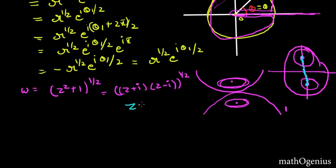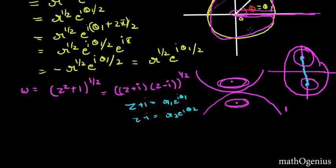Here is a hint for the exercise: put z + i = R₁·e^(iθ₁) and z − i = R₂·e^(iθ₂). If there were no i, the branch point would be the origin — but here you take i and −i as the branch points. Substitute these values into the function, rotate by setting θ₁ = θ + 2π, and solve to see how this works.